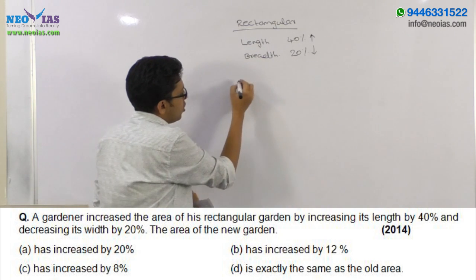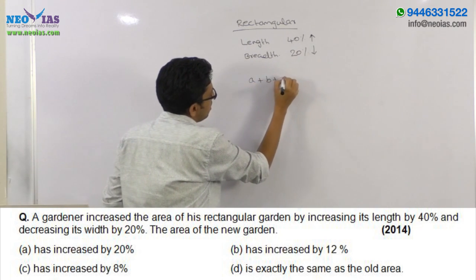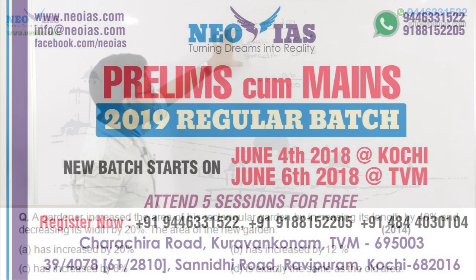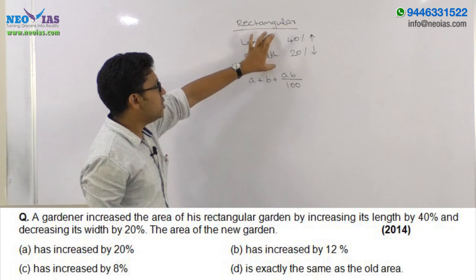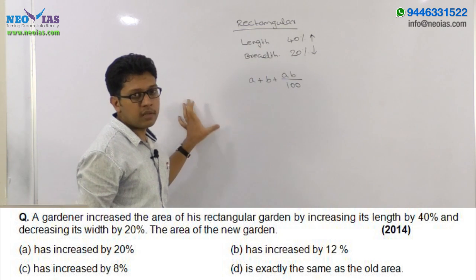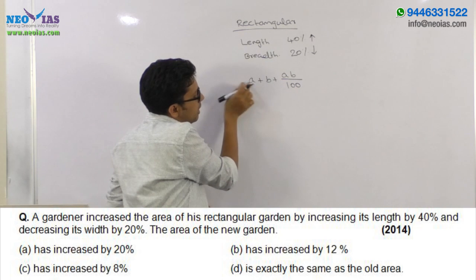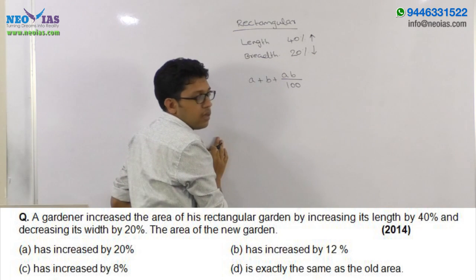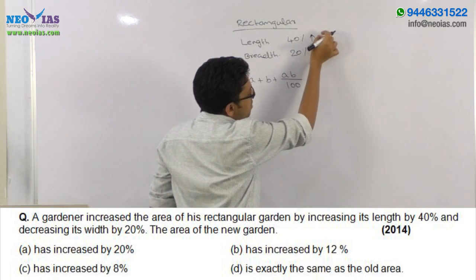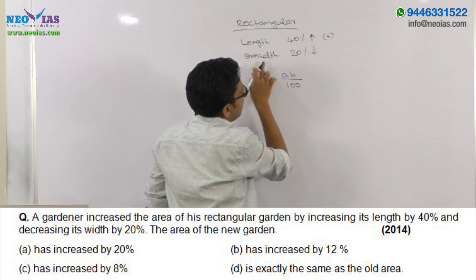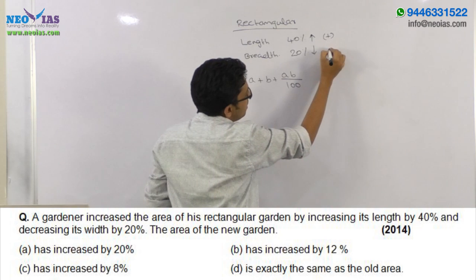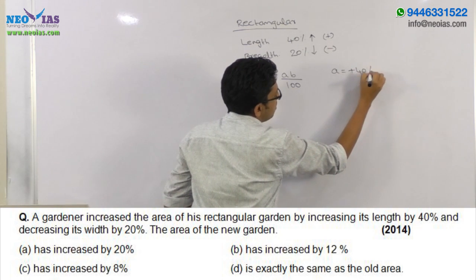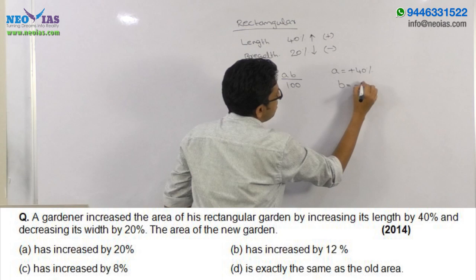There is a shortcut formula to solve this problem: A plus B plus AB divided by 100. We need to find the total percentage change in the area of this rectangular garden due to the percentage changes in length and breadth. Here A is the percentage increase or decrease in length and B is the percentage increase or decrease in breadth. For an increase, take it as positive; for a decrease, take it as negative. So A will be plus 40% and B will be minus 20%.